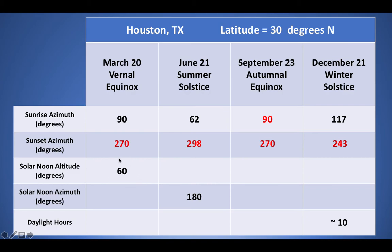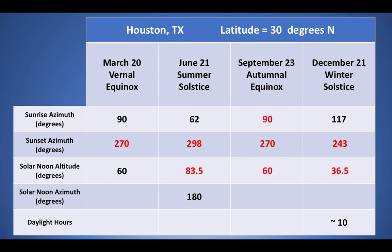Next is the solar noon altitude. The sun is about 60 degrees above the horizon on the vernal equinox in Houston. As soon as I know the vernal equinox altitude, I immediately know the autumnal equinox is the same — fill that in. From the equinox to the summer solstice, the sun gets higher by 23.5 degrees: 60 plus 23.5 gives 83.5 degrees — much higher in the sky, close to being directly overhead. For the winter solstice, the sun gets lower by 23.5 degrees: 60 minus 23.5 gives 36.5 degrees.